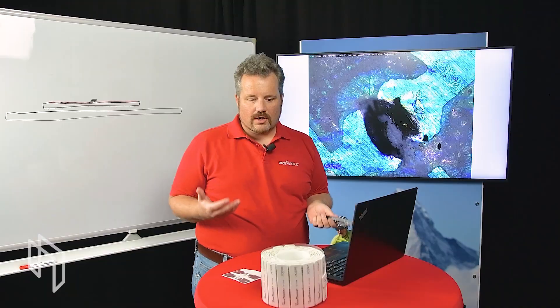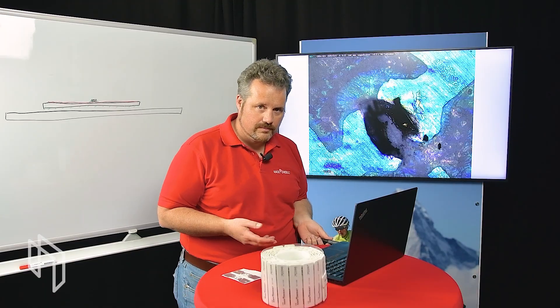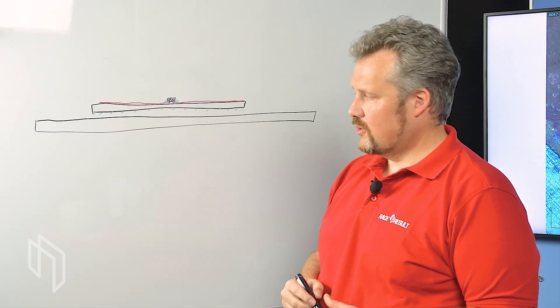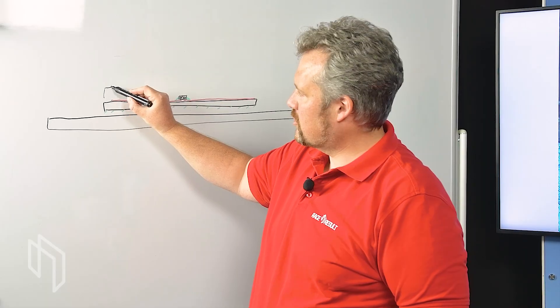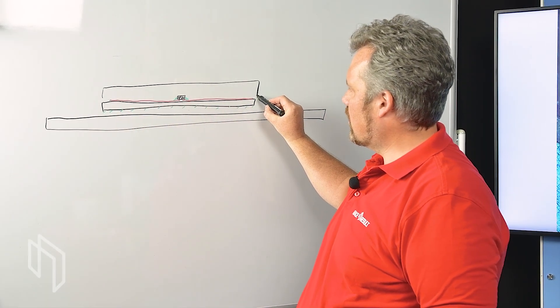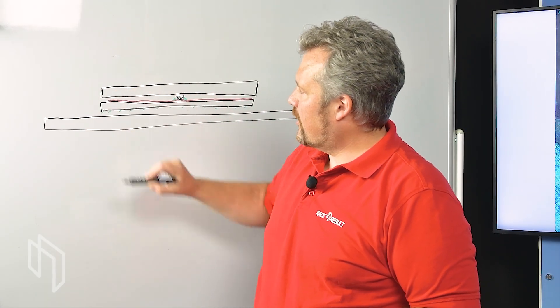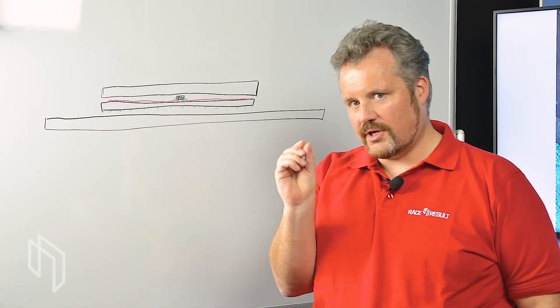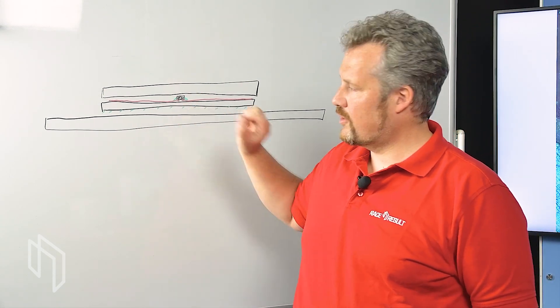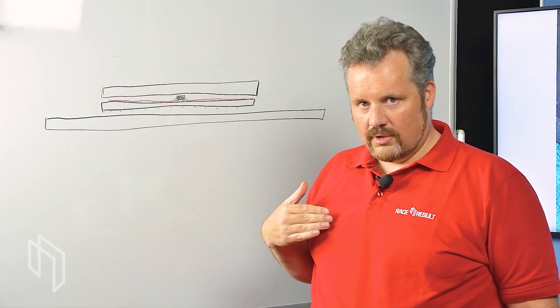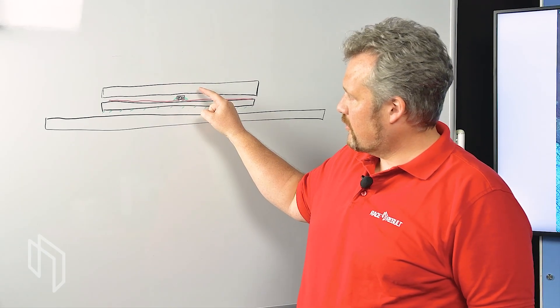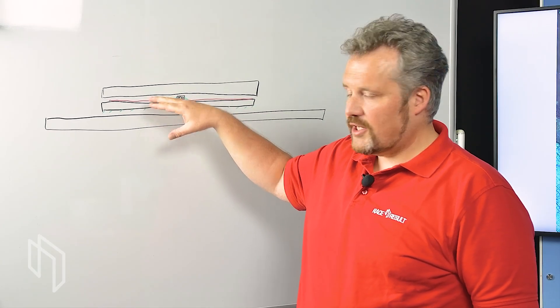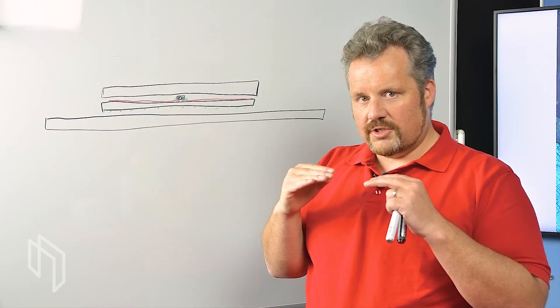Now the question is, how is the RaceSalt transponder constructed? Probably I'm not telling you anything new, but we have another sheet on here which is actually our foam. Yes, this foam's main purpose is to create some distance between the antenna and the human body. But the secondary benefit of that foam is that it protects the chip and it gives the whole sandwich structure more rigidity against bending.